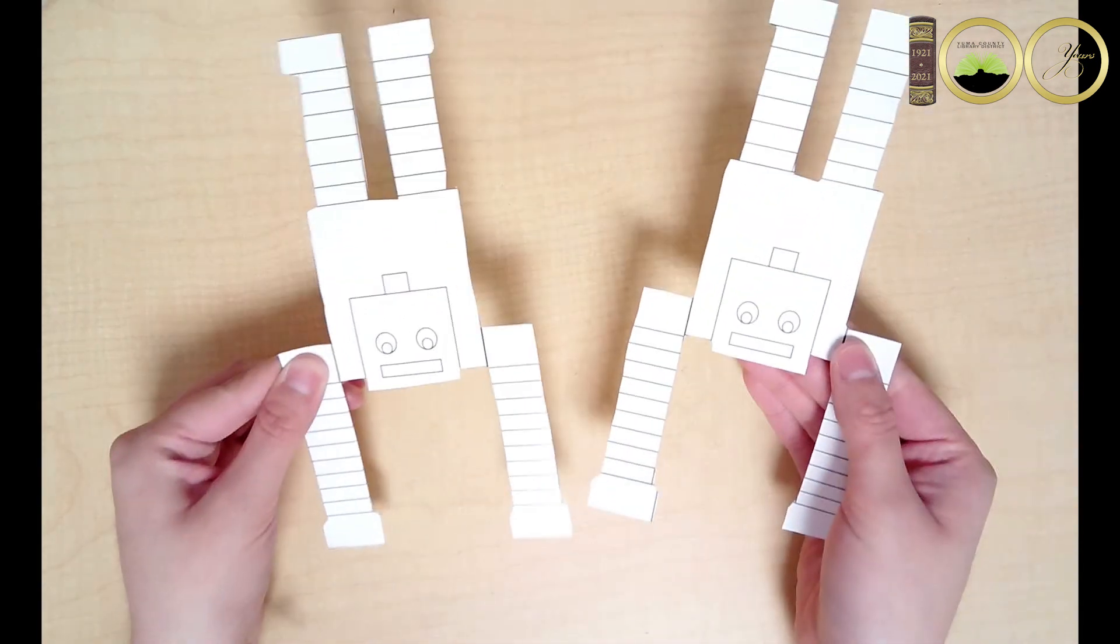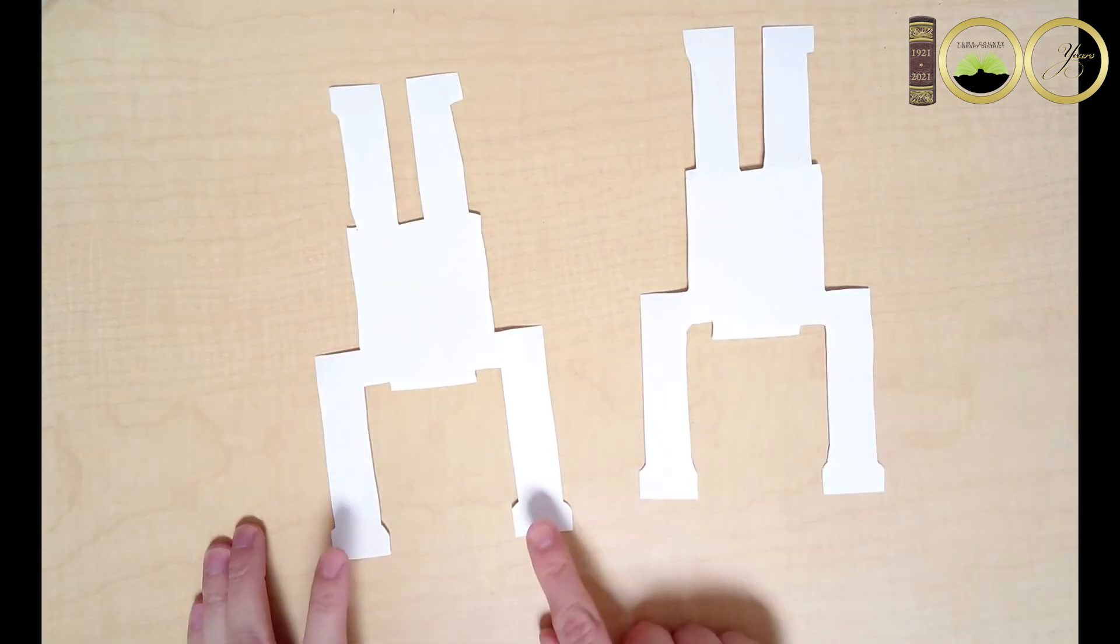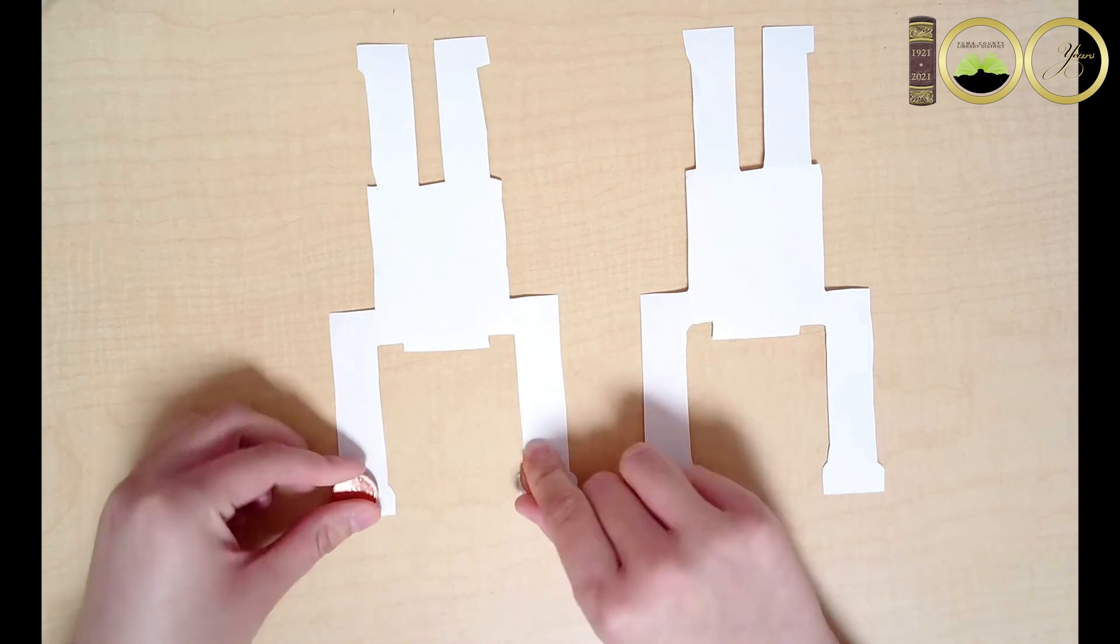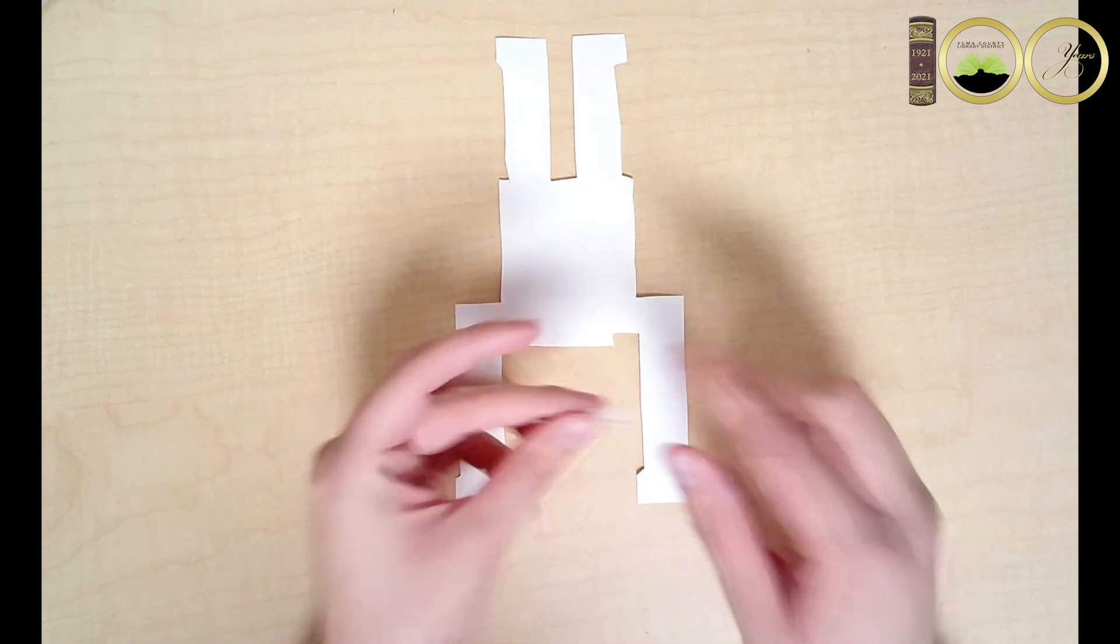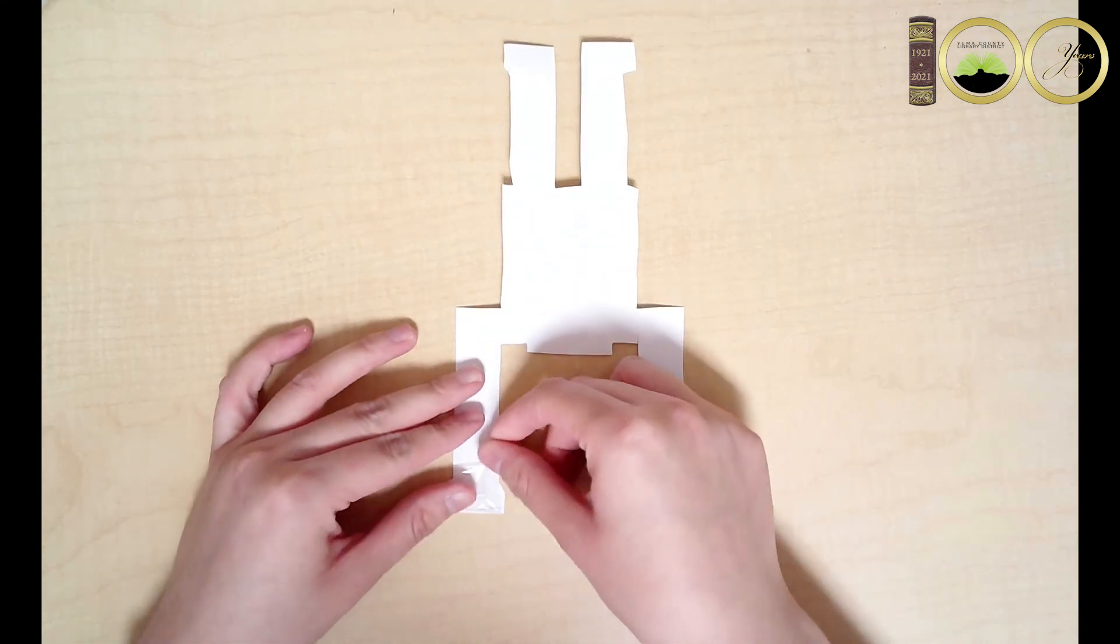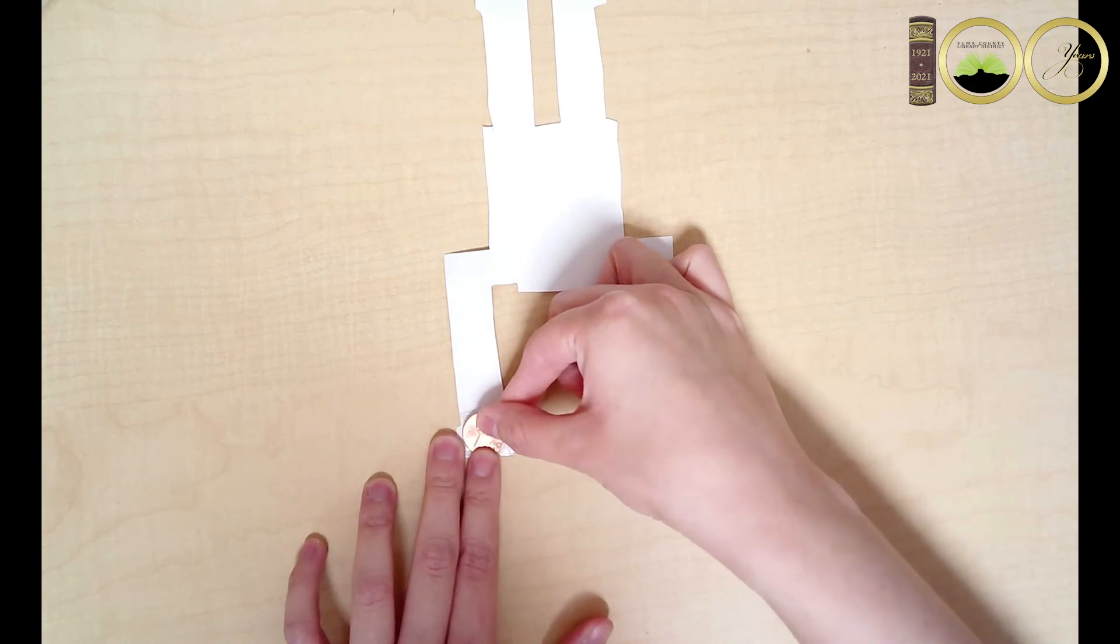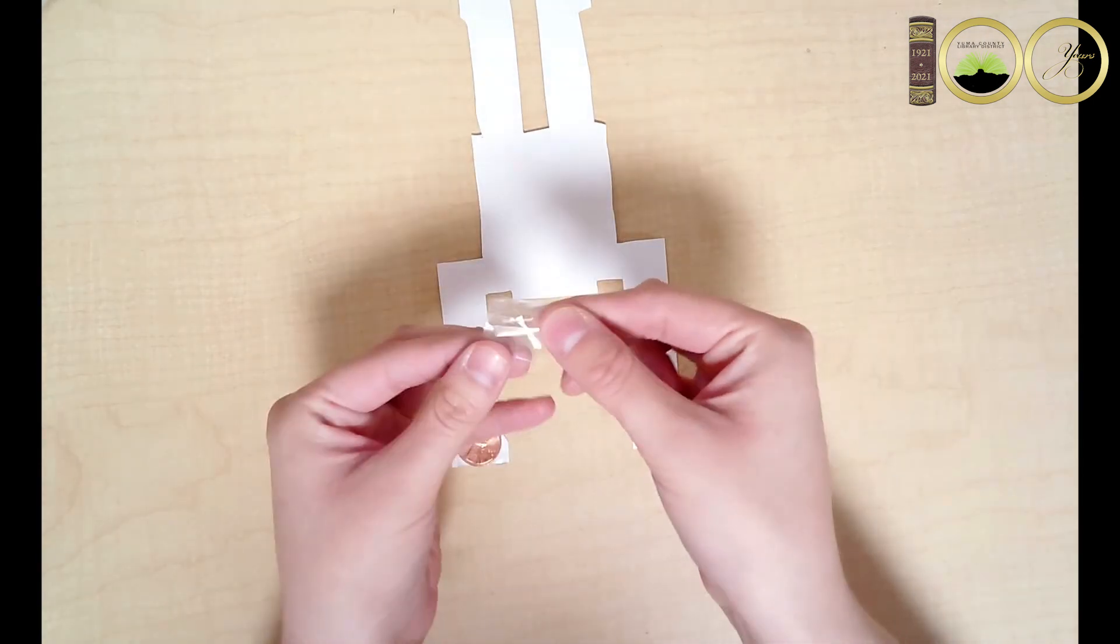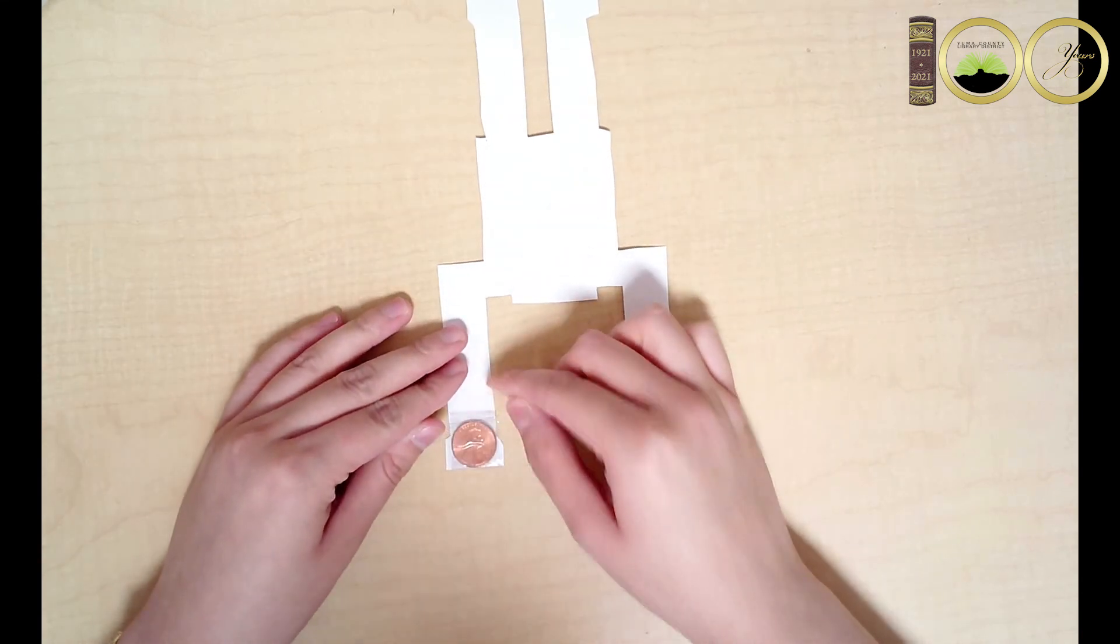Now that we have both pieces, we will be taping both our pennies onto the hands of one robot and using the other robot to put over it. Next, place a small piece of rolled tape onto one hand. Once you've done that, stick one penny onto the tape. Then, using another small piece of rolled tape, place it on the penny. Make sure you do this for the other hand too.